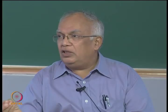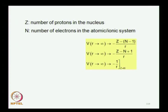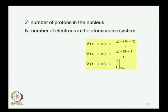In stellar space you do have extremely highly charged ions — for example, iron stripped of most of its electrons, leaving very few electrons with the iron nucleus. Depending on the number of electrons, as r tends to infinity the potential goes as 1/r if N equals Z, but if N is not equal to Z it goes as (Z − N + 1)/r. As r tends to 0, the potential goes as −Z/r.